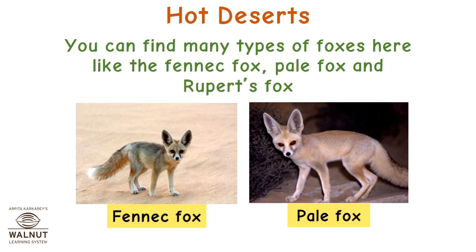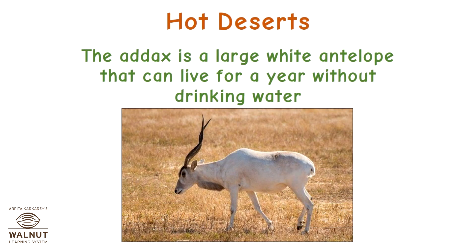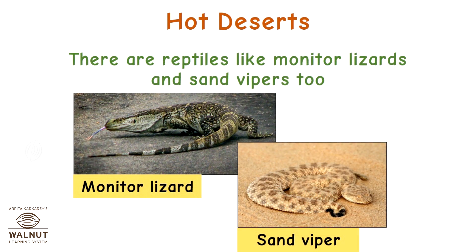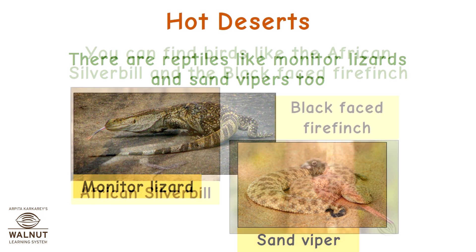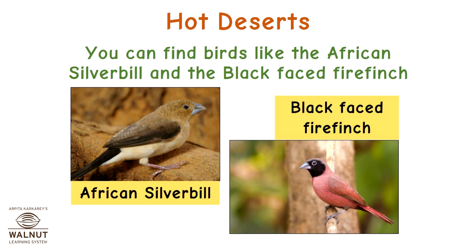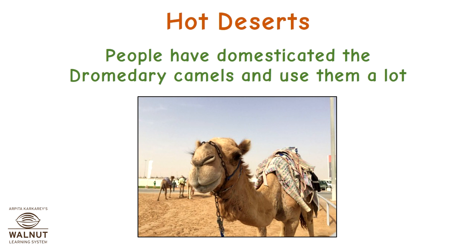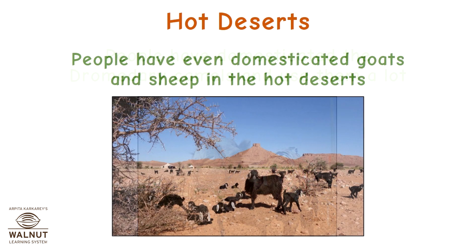You can find many types of foxes here like the fennec fox, pale fox, and rupert's fox. The addax is a large white antelope that can live for a year without drinking water. The dorcas gazelle can also live for a long time without drinking water. There are reptiles like monitor lizards and sand vipers, birds like the African silver bill and the black-faced fire finch, and the death stalker scorpion which has a dangerous poison. People have domesticated dromedary camels, goats, and sheep in the hot deserts.